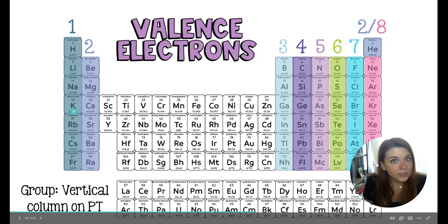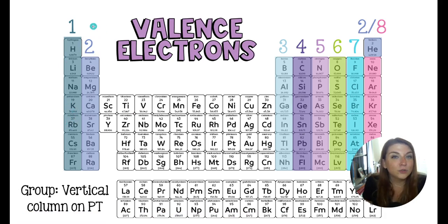Everything in group 1 has one valence electron. Everything in group 2 has two valence electrons. Everything in boron's group has 3, 4, 5, 6, 7, until we get to group 18.